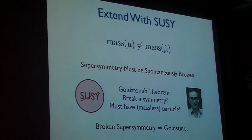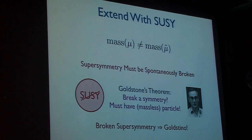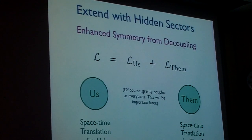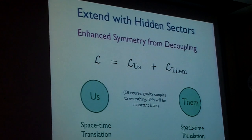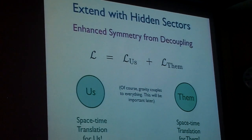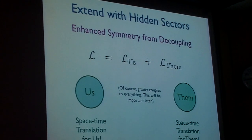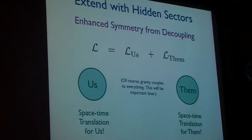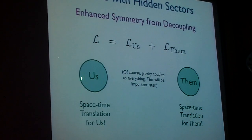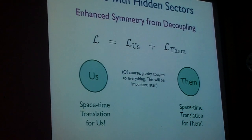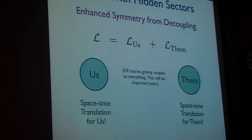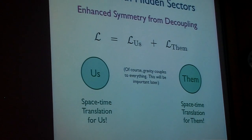Another way of expanding space-time symmetry is a little less familiar, but no less profound. You can expand space-time symmetry by adding extra hidden sectors. You can enhance symmetry via decoupling. So here's us, we the standard model. We have space-time translation invariance. We think that energy momentum is conserved.